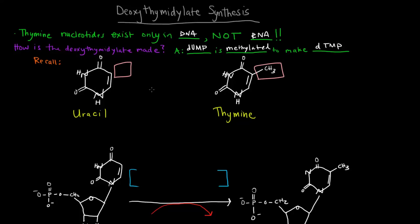If we want to make a thymine nucleotide, or specifically a deoxynucleotide, all we have to do is take uracil and add a methyl group. That's exactly what happens. We have deoxyuridine monophosphate and add the methyl group to make DTMP.